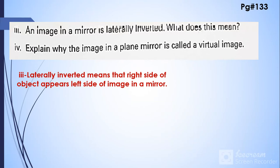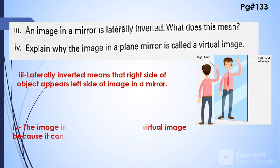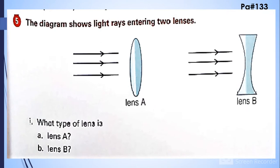Explain why the image in a plane mirror is called a virtual image. So that's why we cannot get it on a screen. The diagram shows light rays entering two lenses. So lens A is a convex lens and lens B is a concave lens.